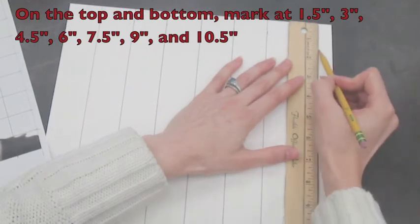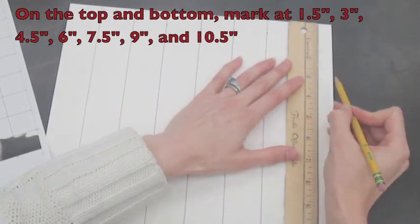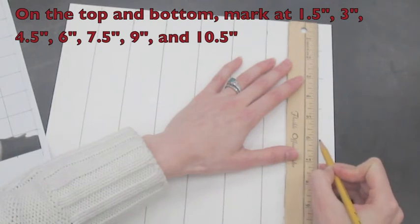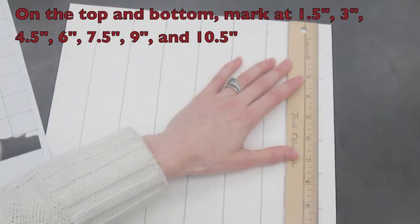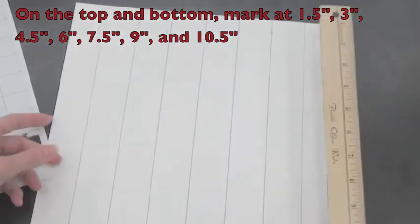We need to finish these squares by marking on the sides again, now that I've turned my paper. Mark at 1 and a half, 3, 4 and a half, 6, 7 and a half, 9, and 10 and a half.